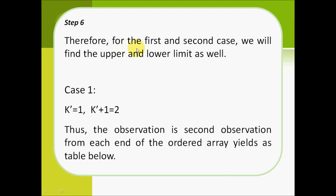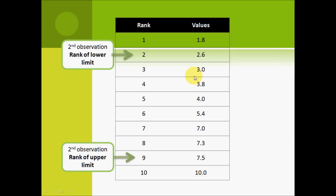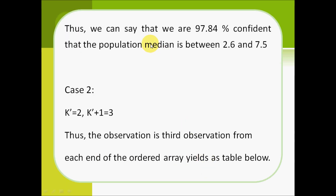Step 6: we determine the upper and lower limits for the first and second case. For the first case, k' equals 1, so k' plus 1 equals 2. The second observation gives rank 2 as the lower limit and rank 9 as the upper limit. The value for the rank of the lower limit is 2.6 and the value for the rank of the upper limit is 7.5. Thus, we are 97.84% confident that the population median is between 2.6 and 7.5.